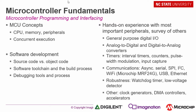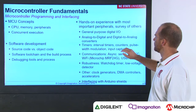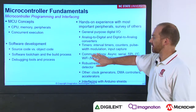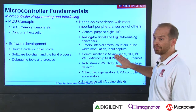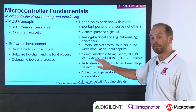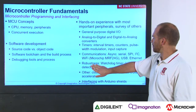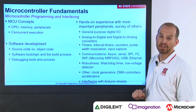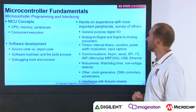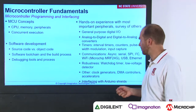This course gives hands-on experience with the most important peripherals and covers the others with a higher-level survey. We focus on general purpose digital IO, analog to digital and digital to analog converters, timers used as interval timers or counters, pulse width modulated signal generation, and capturing the timing of input events. We look at communications: asynchronous serial UART, SPI, and I2C. We also look at Wi-Fi, USB, and Ethernet at a higher level. We look at peripherals for robustness such as the watchdog timer and low voltage detector. We also look at clock generators, DMA controllers, accelerators, and how to interface the board with Arduino shields.